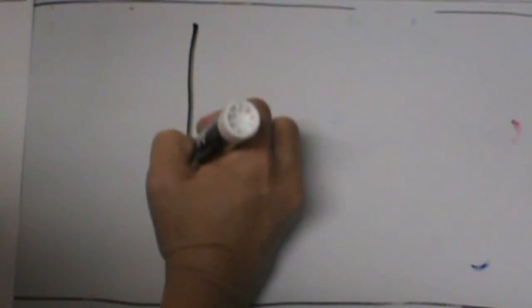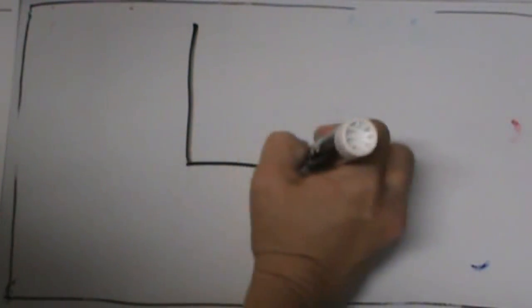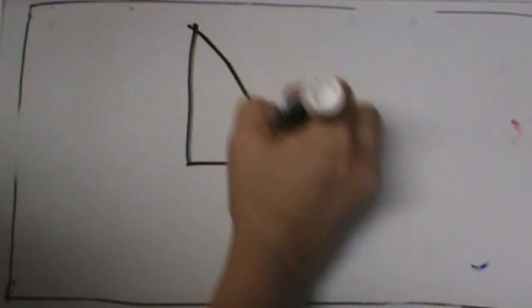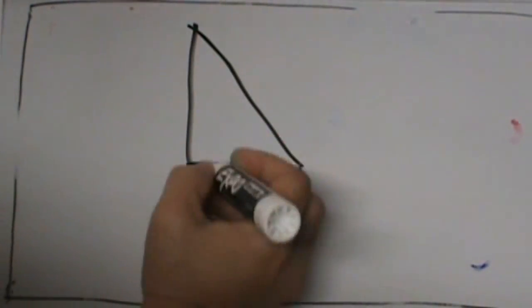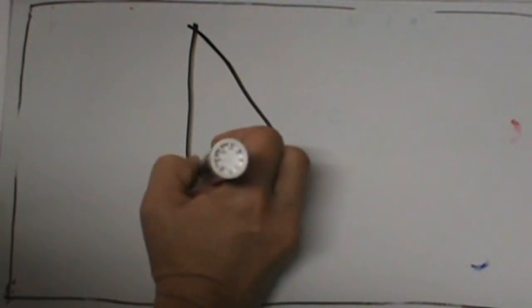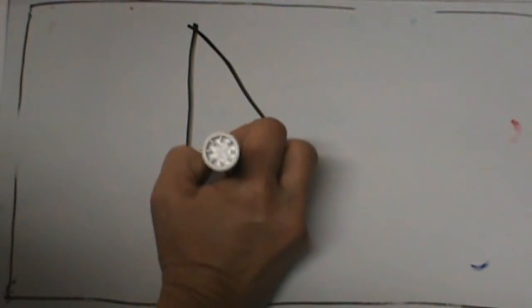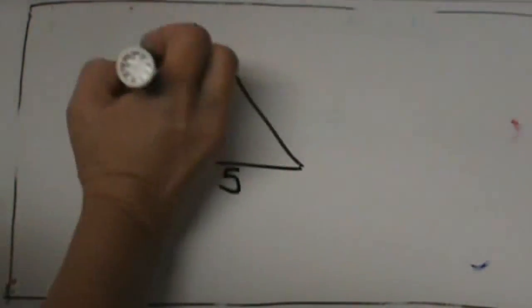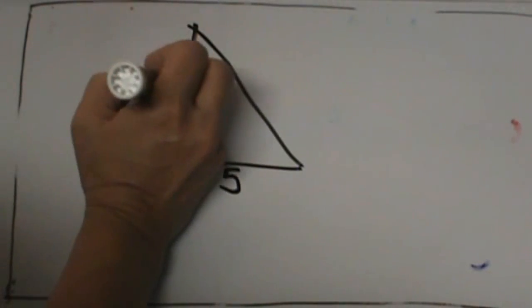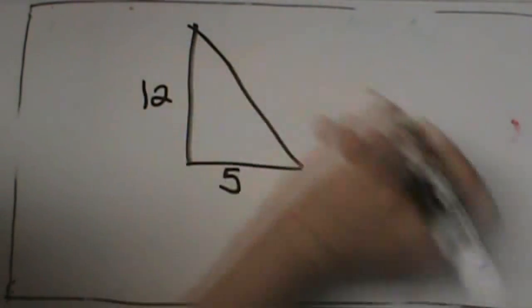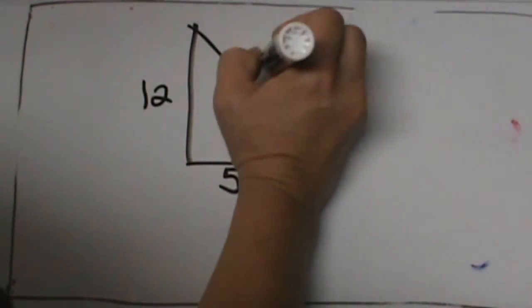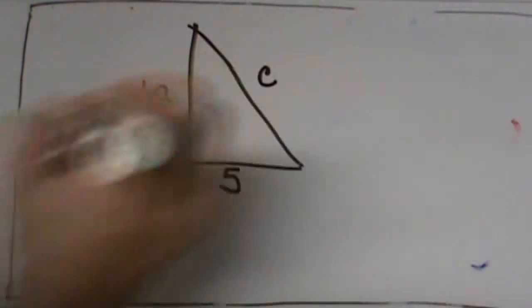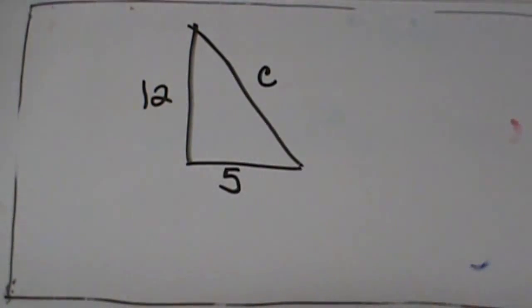Let's draw this up here. We have A which is down here and it is 5, and B is 12, and we are trying to find C. So C is our unknown.